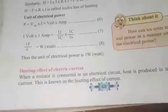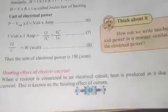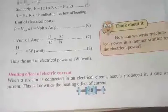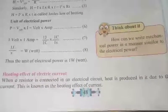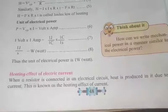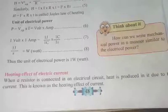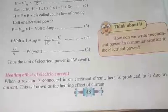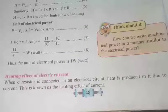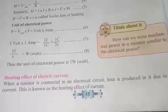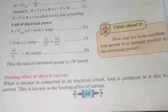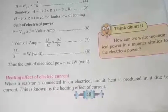Heating effect of electric current. When a resistor is connected in an electric circuit, heat is produced in it due to the current. This is known as the heating effect of current. When a current is passed through a circuit and a resistor is connected, it gets heated because of the current flow.